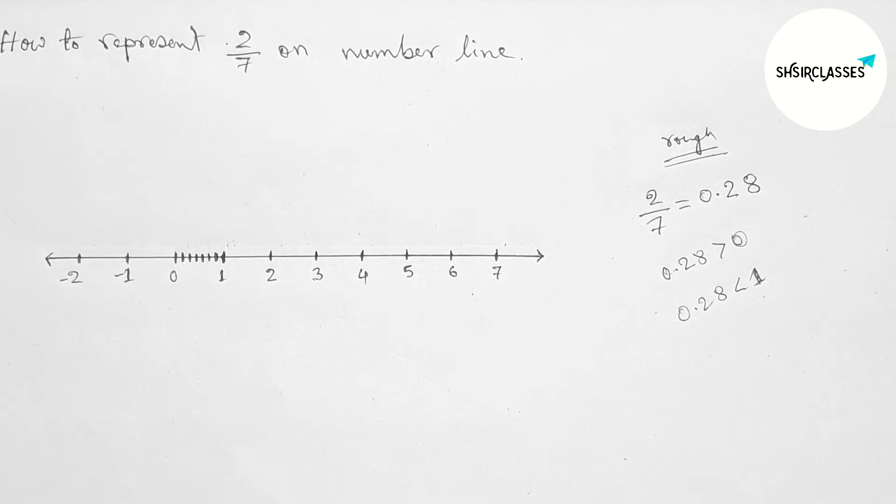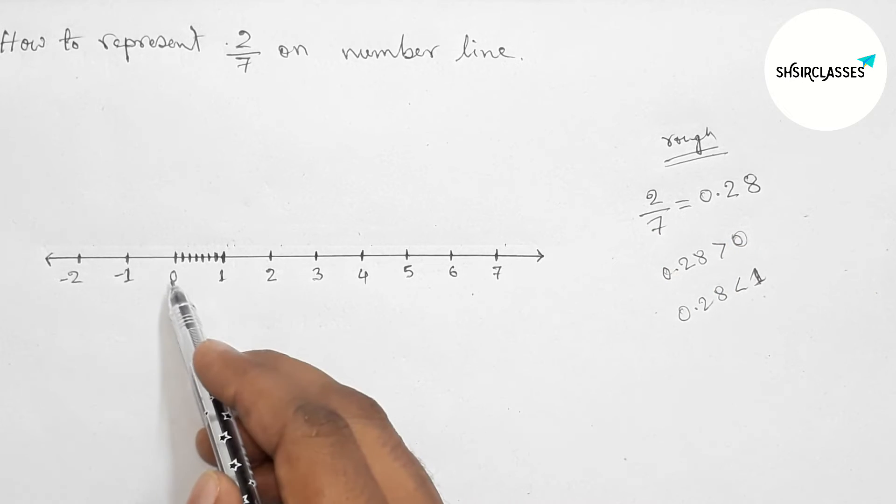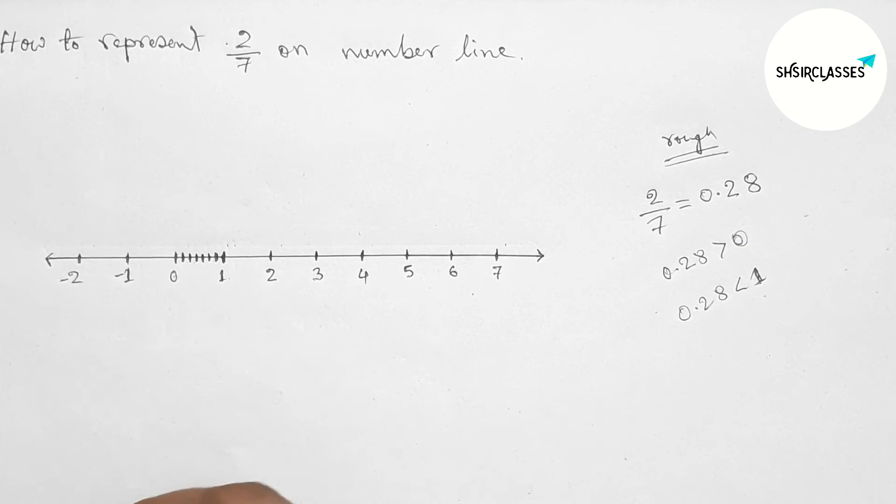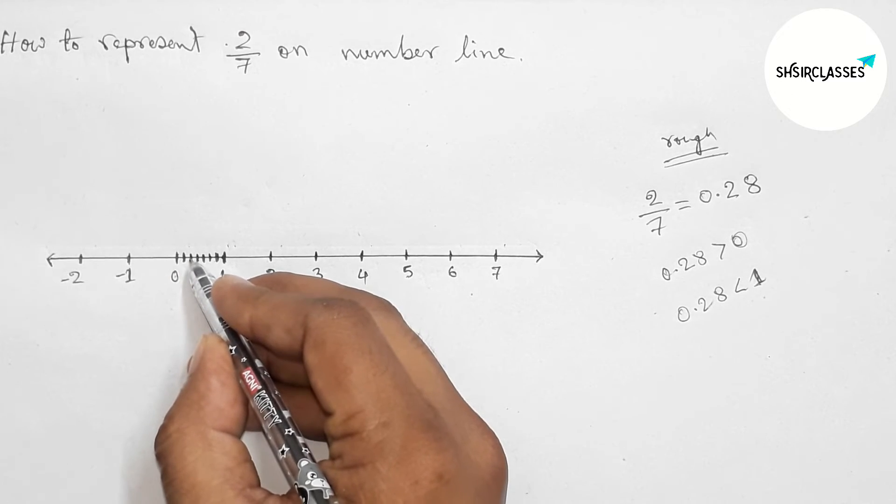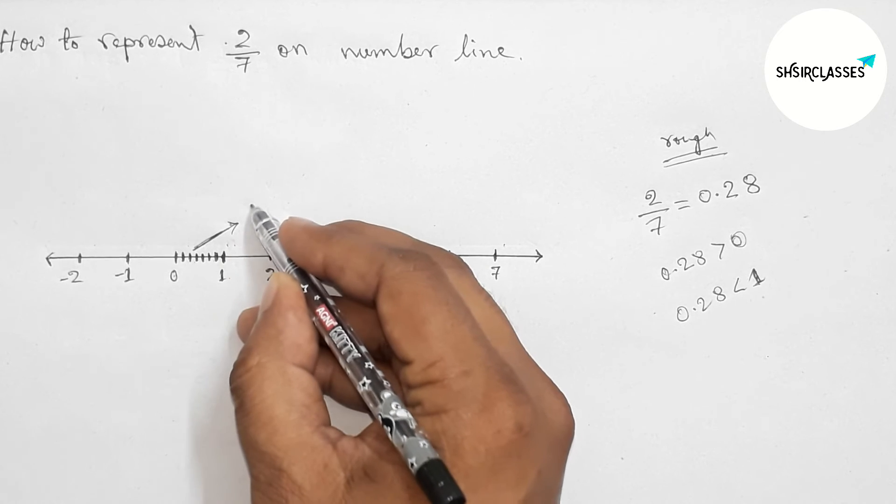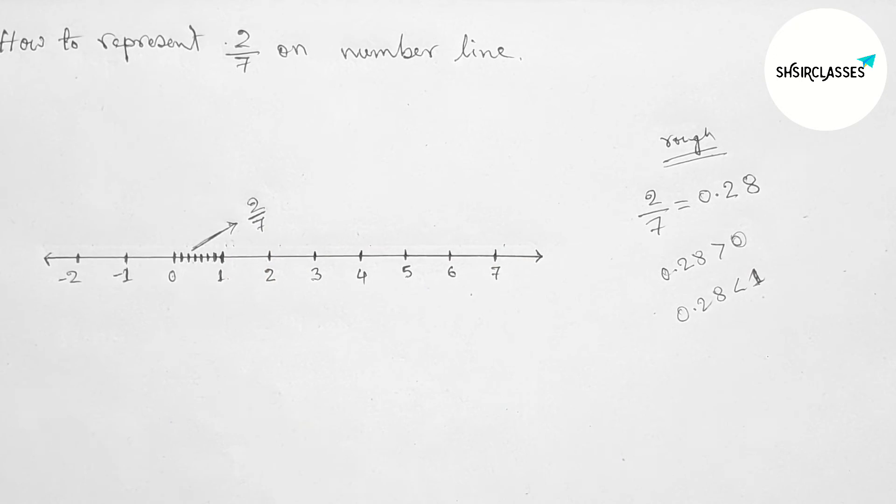So this is 2 by 7. Here 1, 2, 3, 4, 5, 6, 7, so 7 parts. This is 1 by 7, and this one is 2 by 7 part. So this is 2 by 7 on the number line.